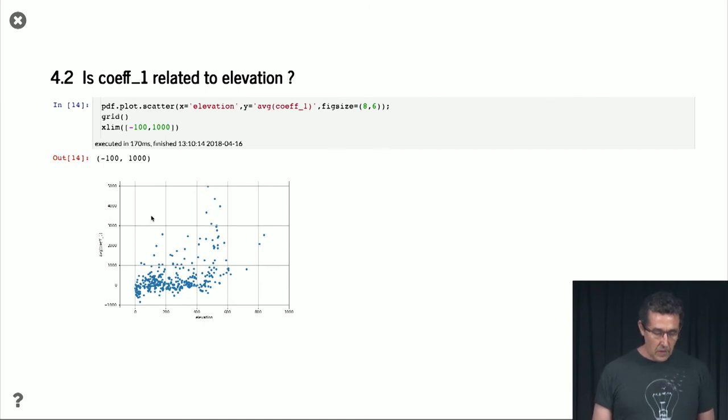Here we have a scatterplot, which shows you the coefficient's value. So, from about zero, where most things are, to high values. And then, the elevation. And we see that there is a little bit of a trend.